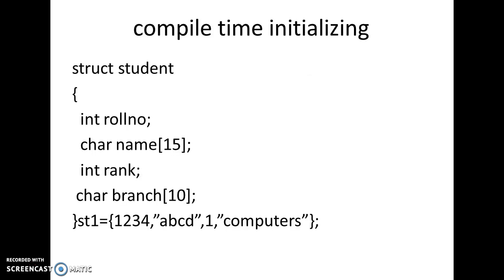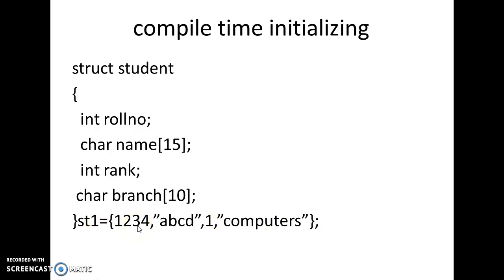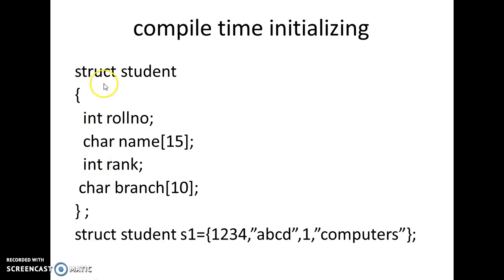For compile-time initialization, we assign values directly in the program. Using the same example — struct student with roll number, name, rank, and branch — while creating the structure variable, using the assignment operator I have given the values: roll number as 1234, name as a string in double quotes, rank as 1, and branch as 'computers' in double quotes.